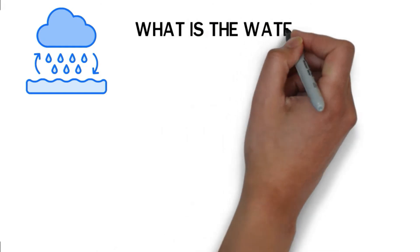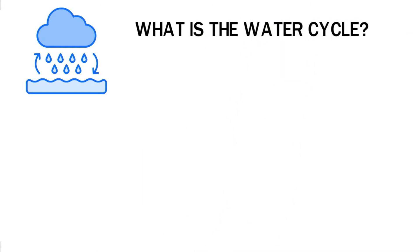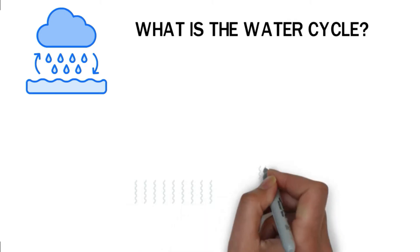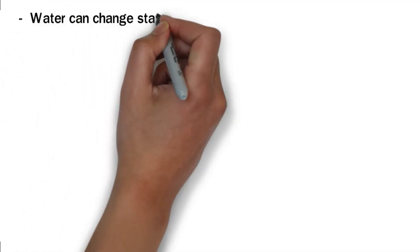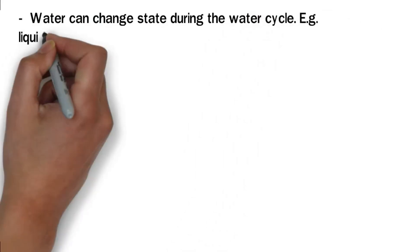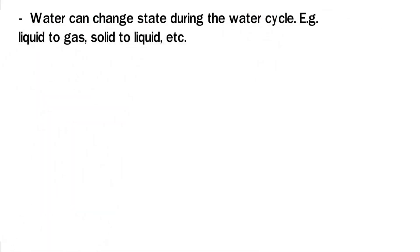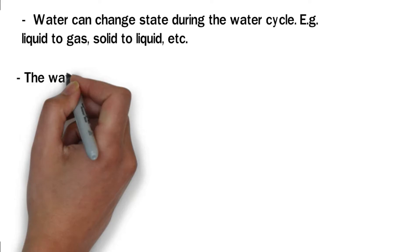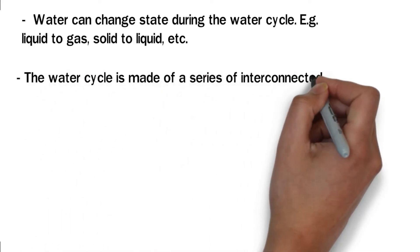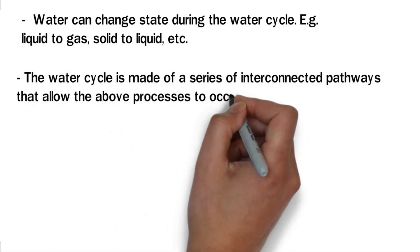What is the water cycle? The water cycle, also known as the hydraulic cycle, is a natural process that describes the movement of water on, below, and above the surface of the Earth. Water can change state during the water cycle, e.g., liquid to gas, solid to liquid, etc. The water cycle is made up of a series of interconnected pathways that allow the above processes to occur efficiently.